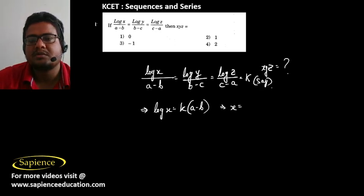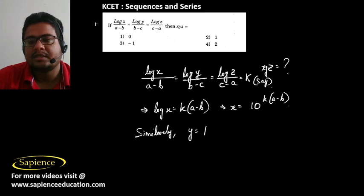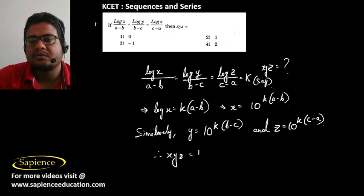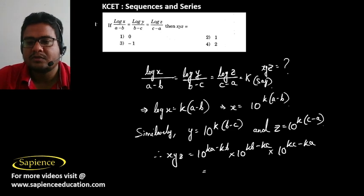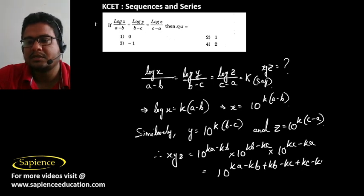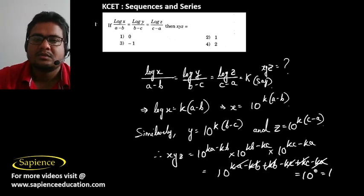So x can be written as 10 power k(a−b). Similarly, y equals 10 power k(b−c) and z equals 10 power k(c−a). Therefore x·y·z equals 10 raised to k(a−b) + k(b−c) + k(c−a). Adding the exponents: ka − kb + kb − kc + kc − ka = 0. So this equals 10 power 0 which is 1. Option 2 is the correct answer.